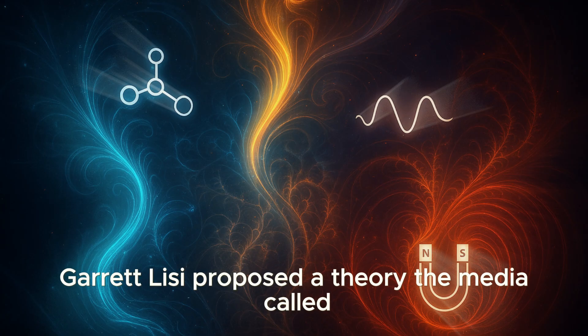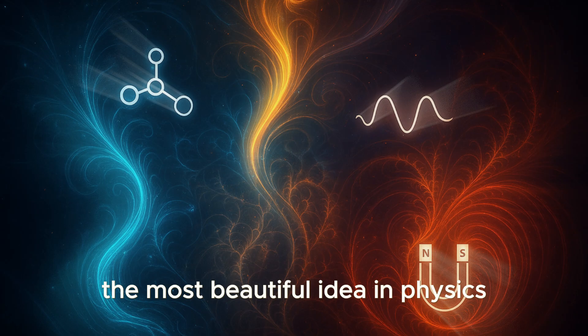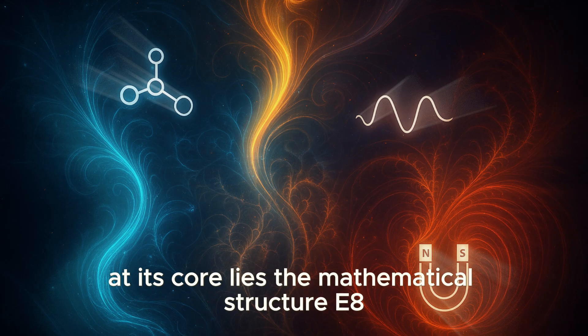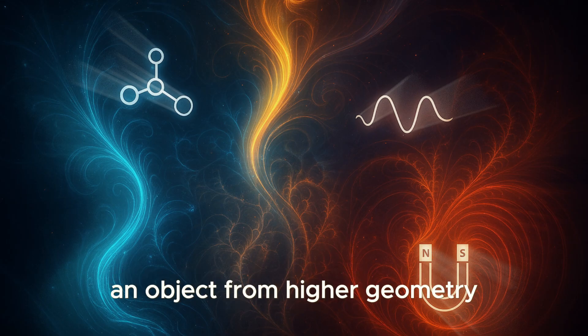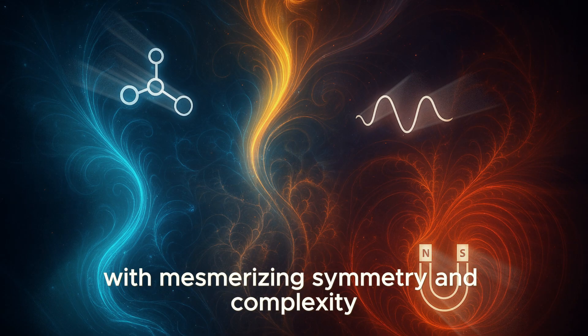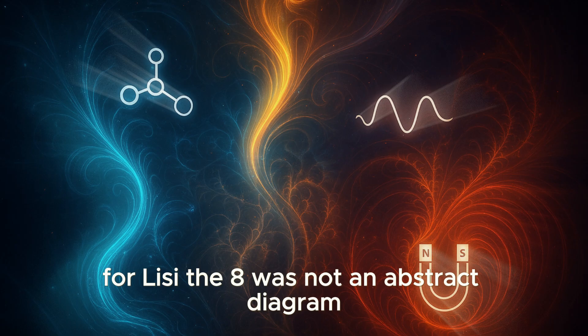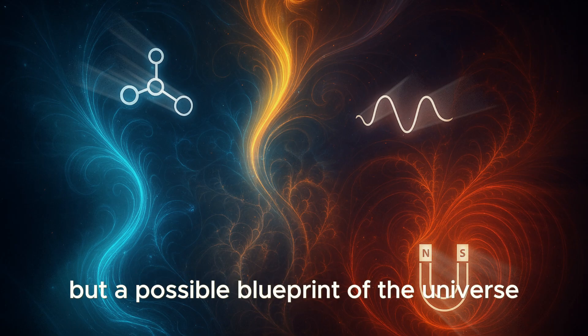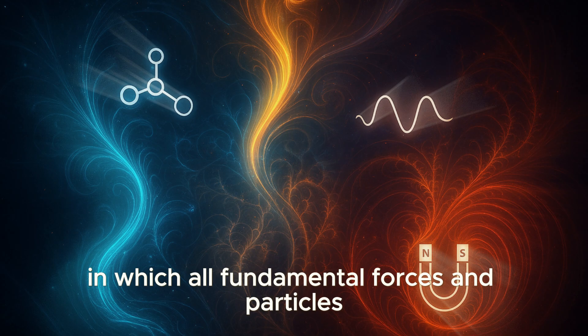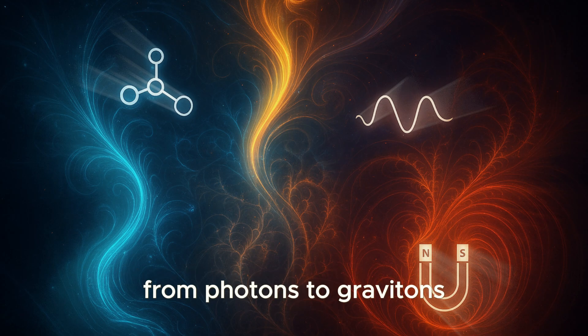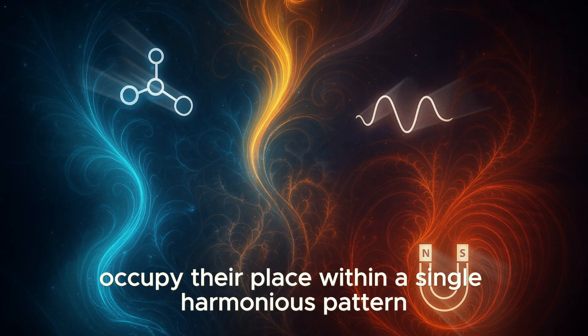Garrett Lisi proposed a theory the media called the most beautiful idea in physics. At its core lies the mathematical structure E8, an object from higher geometry with mesmerizing symmetry and complexity, almost impossible to imagine. For Lisi, E8 was not an abstract diagram but a possible blueprint of the universe in which all fundamental forces and particles, from photons to gravitons, occupy their place within a single harmonious pattern.